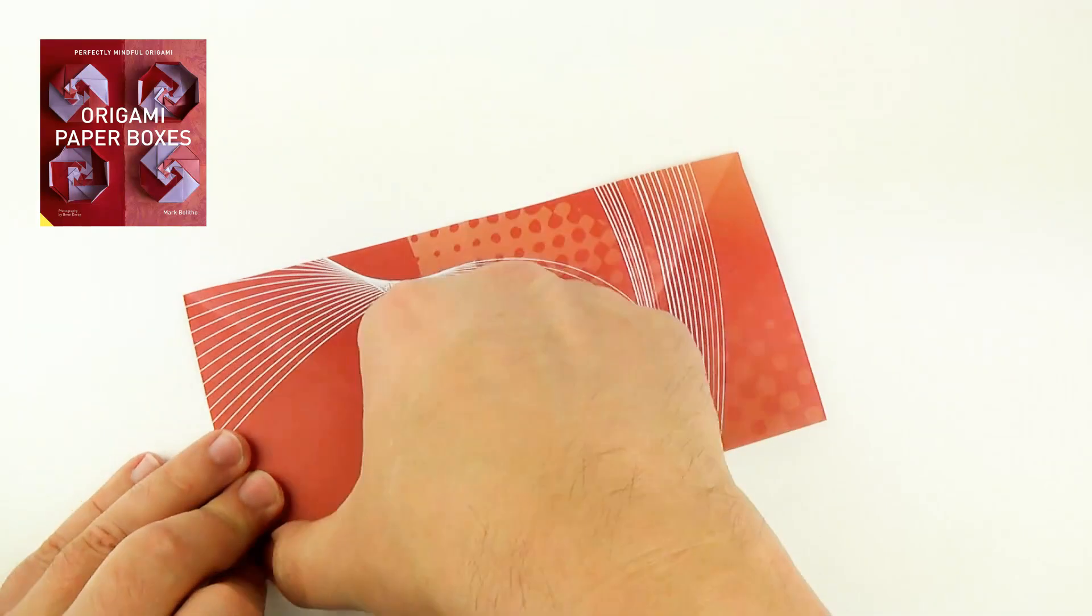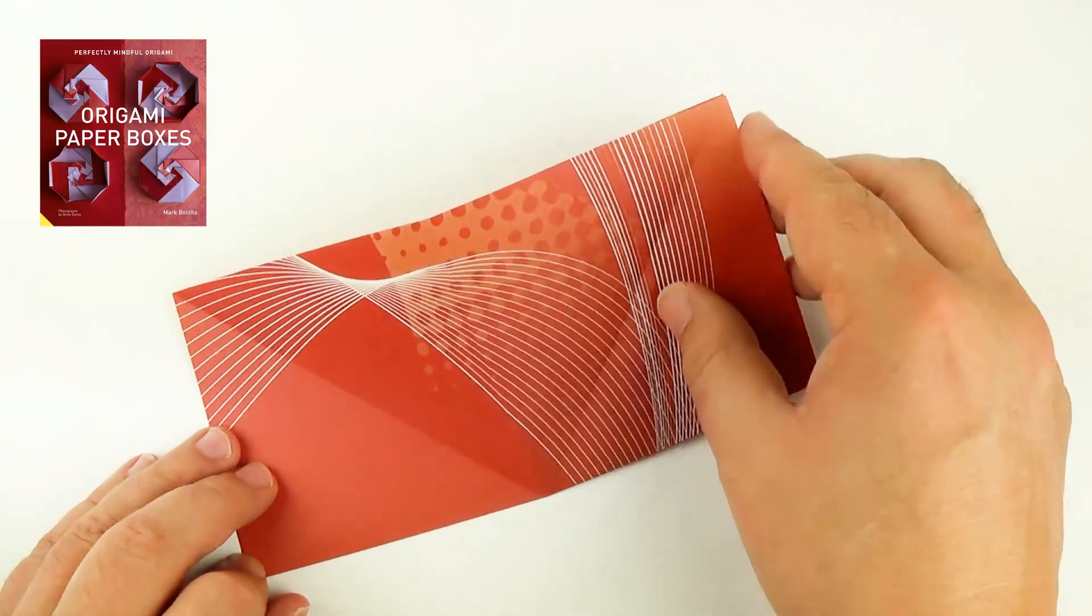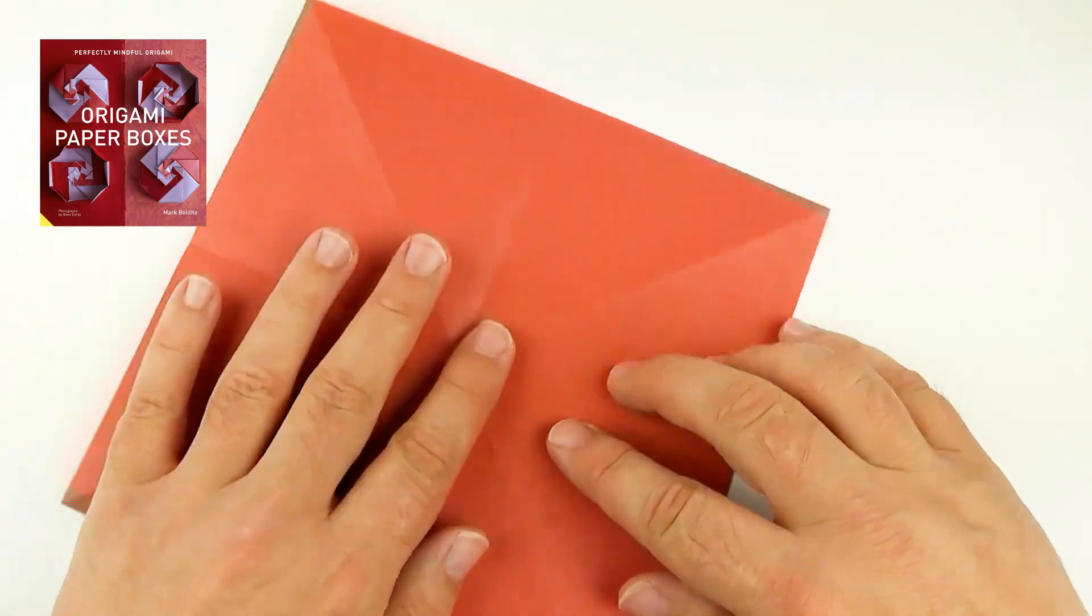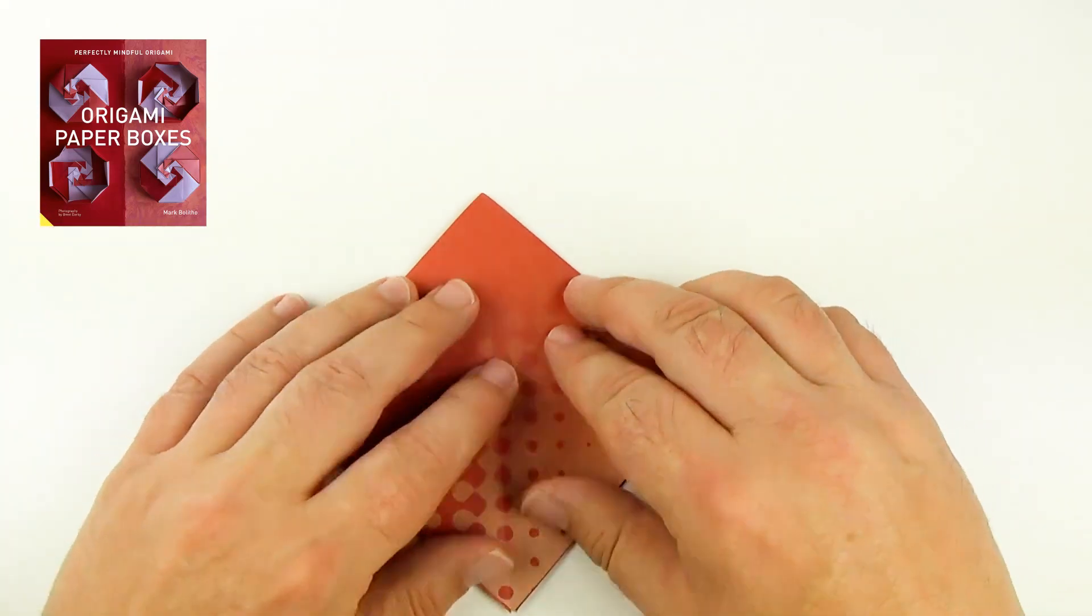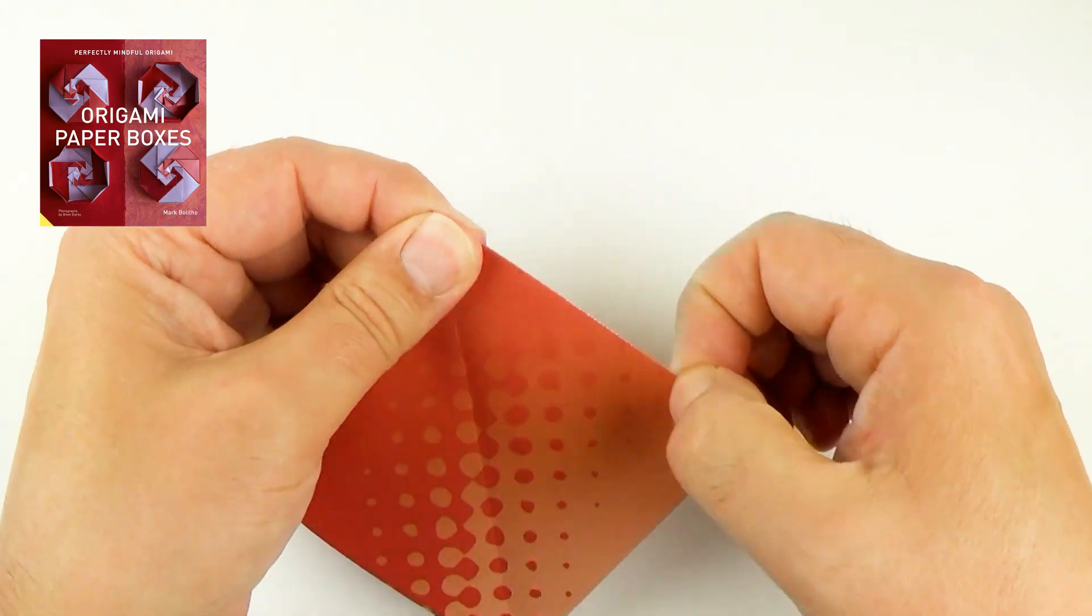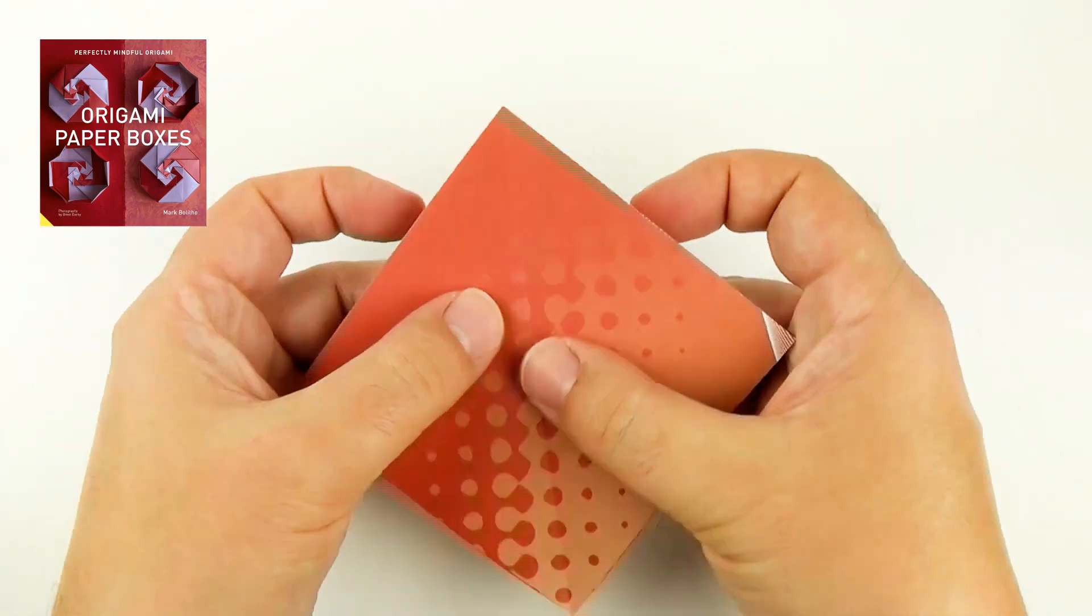So now I have four folds going through the middle. Then open up to what will be the white side, and put all those folds together. We may call it a preliminary base.